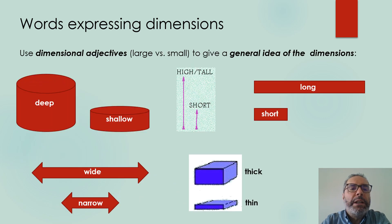Also we can use some dimensional adjectives, large versus small, to give a general idea without being very specific about the idea of dimensions. Deep shallow, wide and the opposite property narrow, high, tall, short.